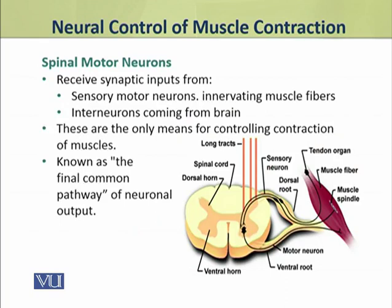Spinal motor neurons receive inputs from two sources. First, sensory neurons which innervate the muscle fibers provide inputs to the spinal motor neurons. Second, long tracts and interneurons coming from the brain provide inputs to the spinal motor neurons.